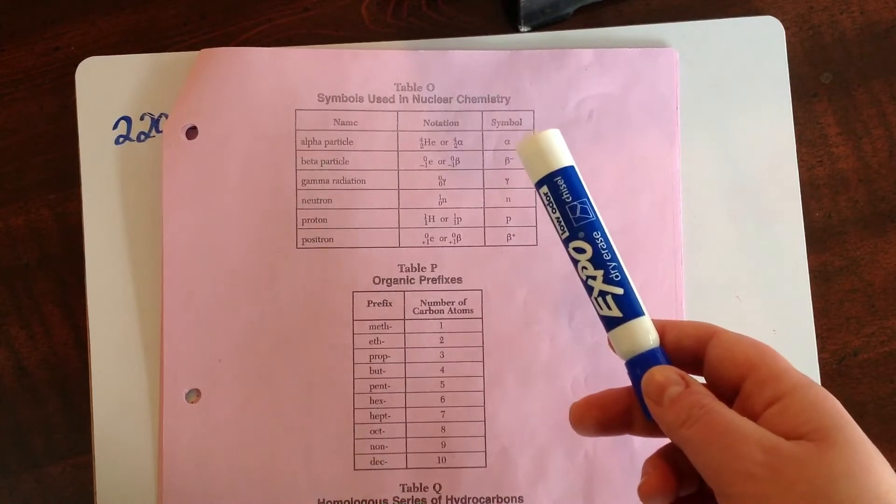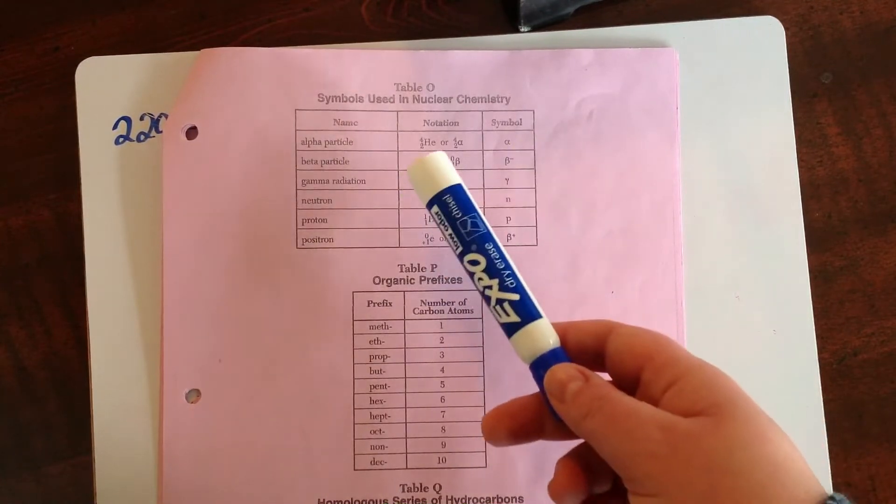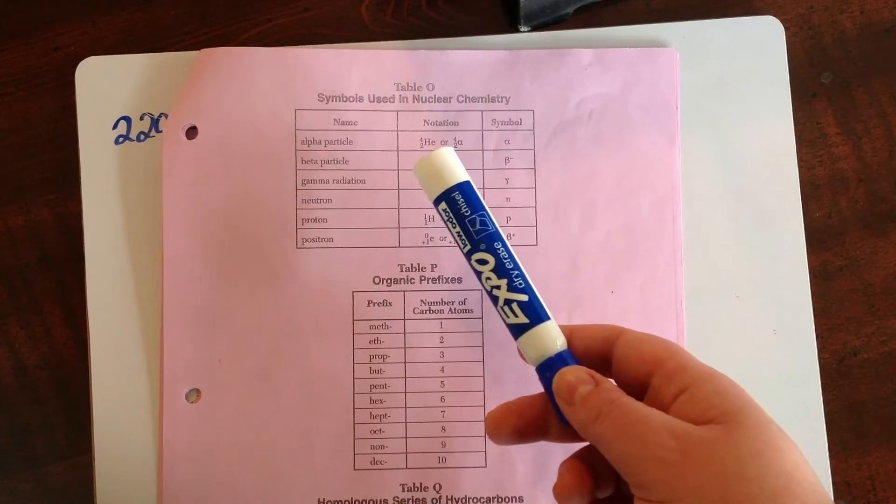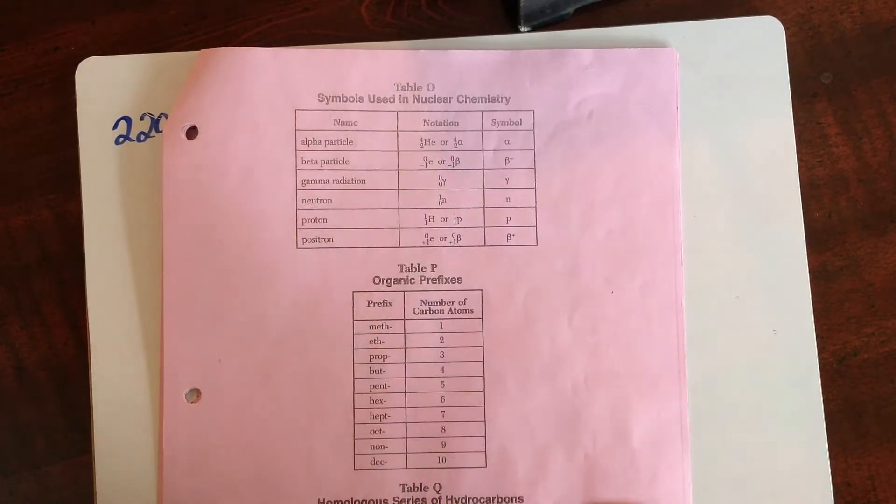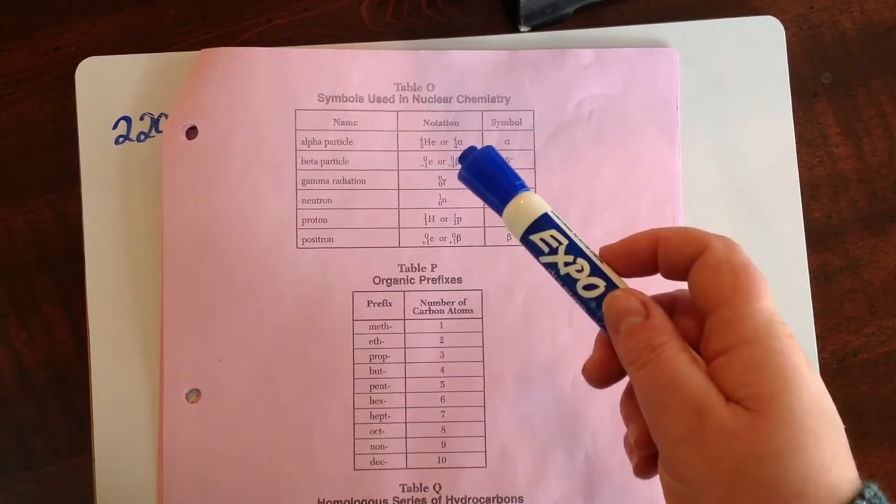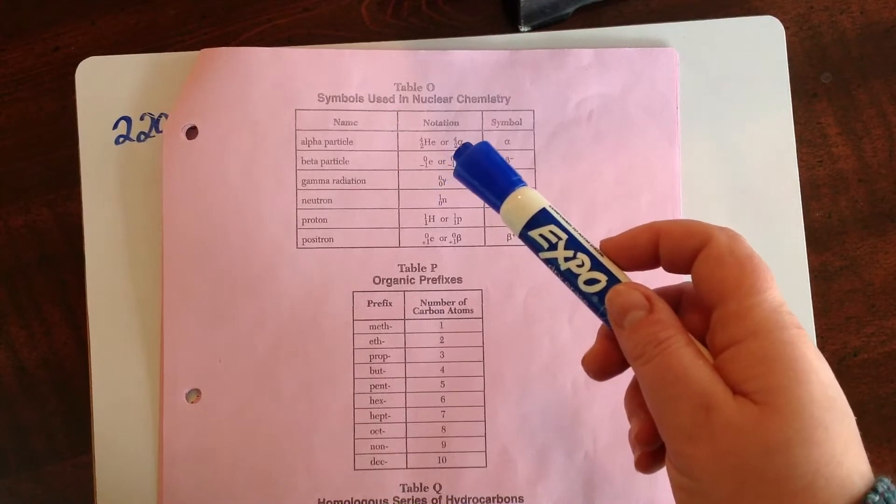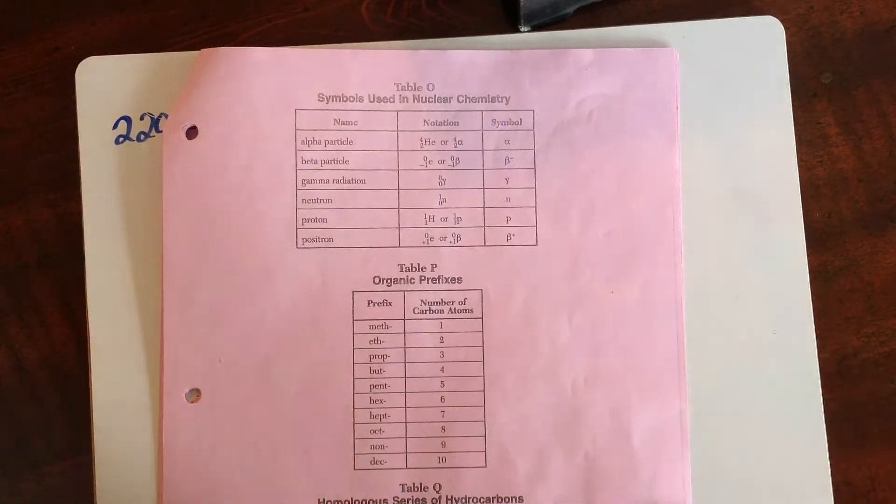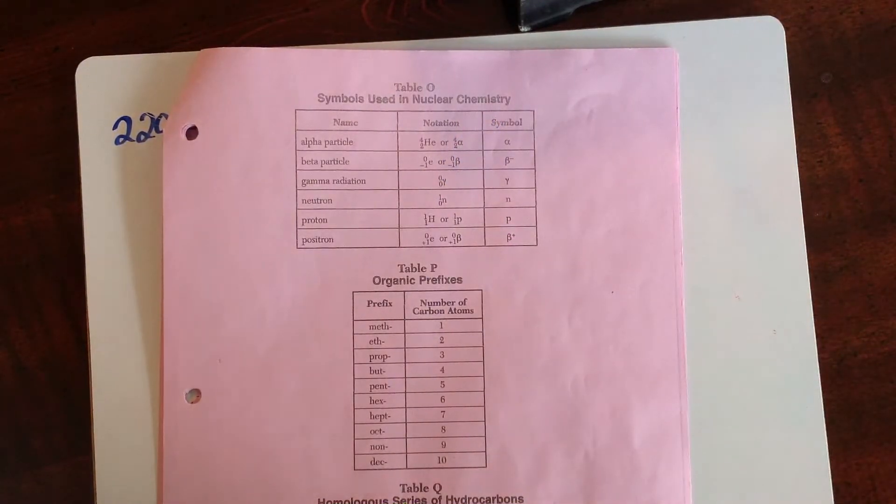So this little symbol here is the Greek letter alpha. The alpha particle is essentially the nucleus of a helium atom. It's made up of two protons and two neutrons. So the bottom number is a 2 for the two protons. The top number is a 4 for the mass number, which is the two protons plus the two neutrons.